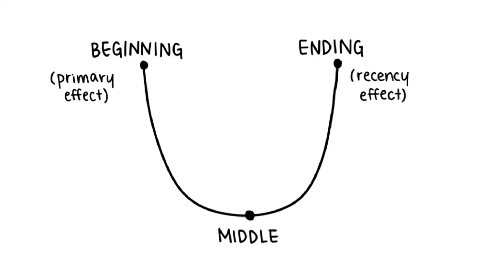Basically, the U-shaped curve means that you begin something at a high point and lose track of it in the middle only to end again at a high point. That would be the primary effect and the recency effect, the two points of the U.